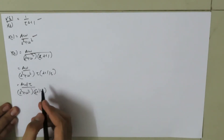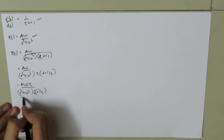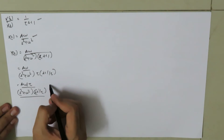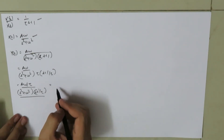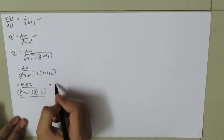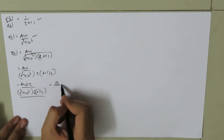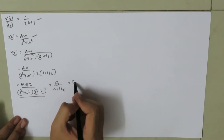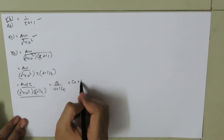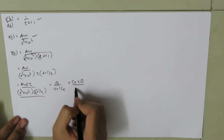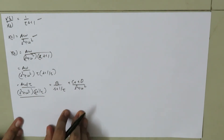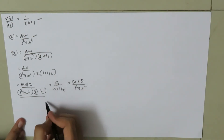We now have our main fraction which can be split into two partial fractions: B upon (s plus 1/tau) plus (C·s plus D) upon (s squared plus omega squared).